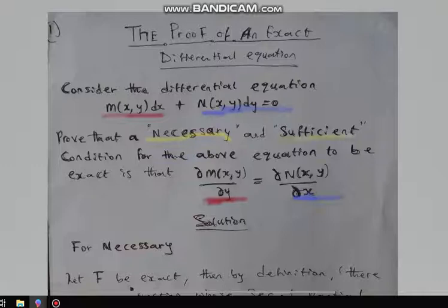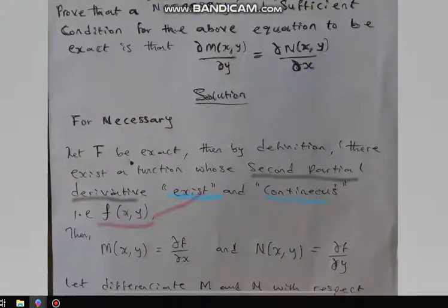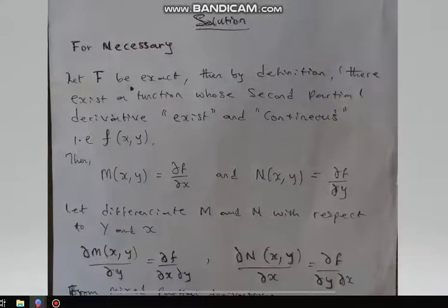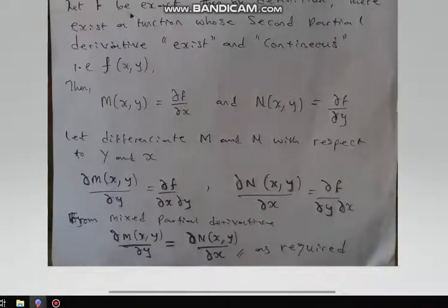I start with the necessary condition. Let f be exact. Then by definition, there exists a function whose partial derivatives exist and are continuous. If f is a function of two variables, this f must exist and be continuous.